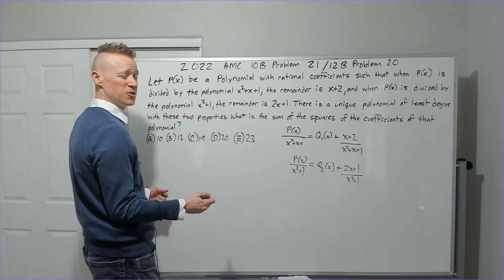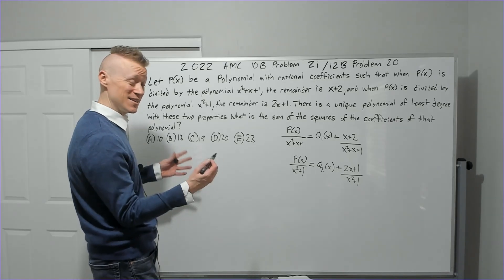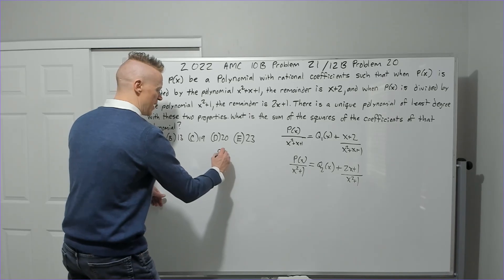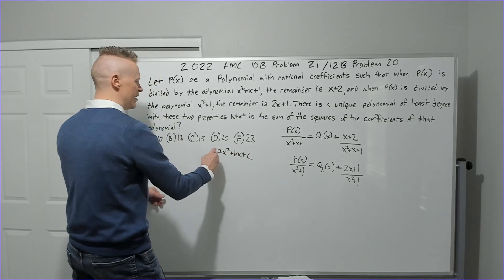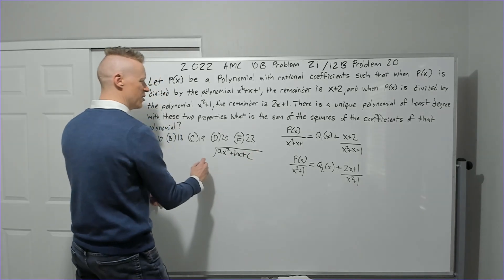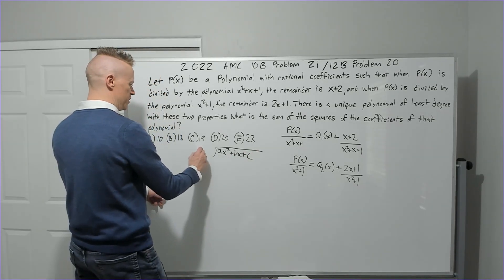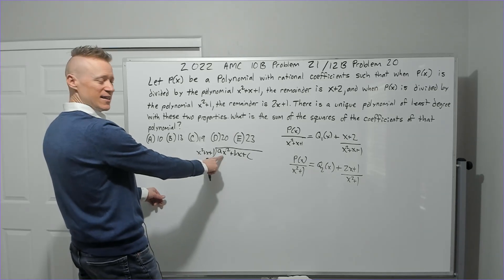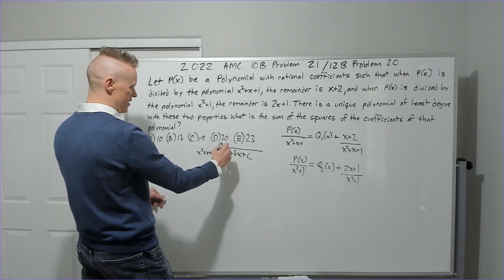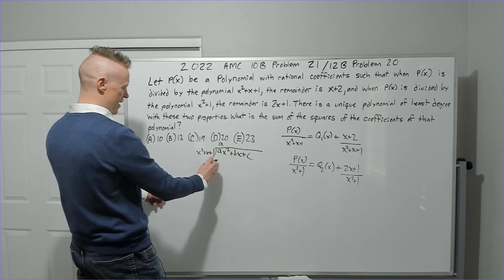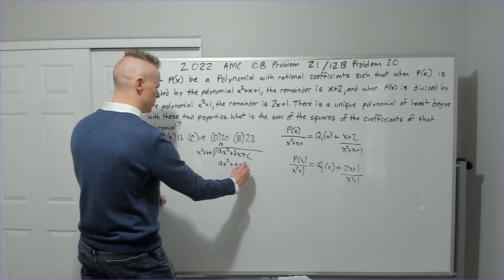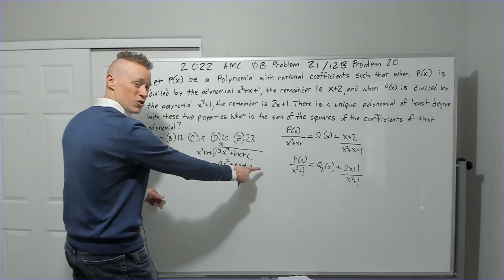So I first said, well, the minimum degree it could be is two, possibly. Let's see if it works if I make p(x) equal to ax squared plus bx plus c. So I'm going to put that here. We're going to put x squared plus x plus one here. x squared times blank is ax squared. The answer is a. Distribute back. You're going to get ax squared plus ax plus a.